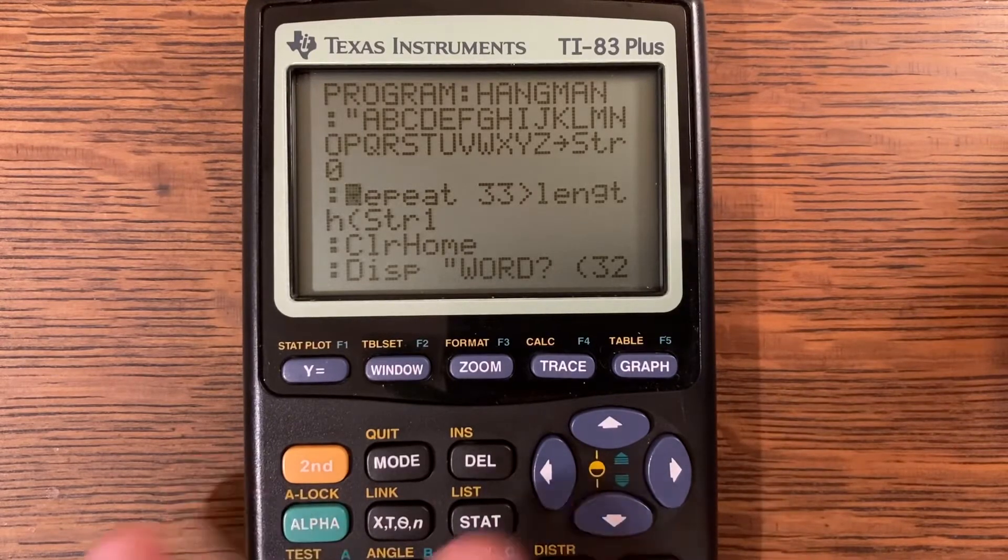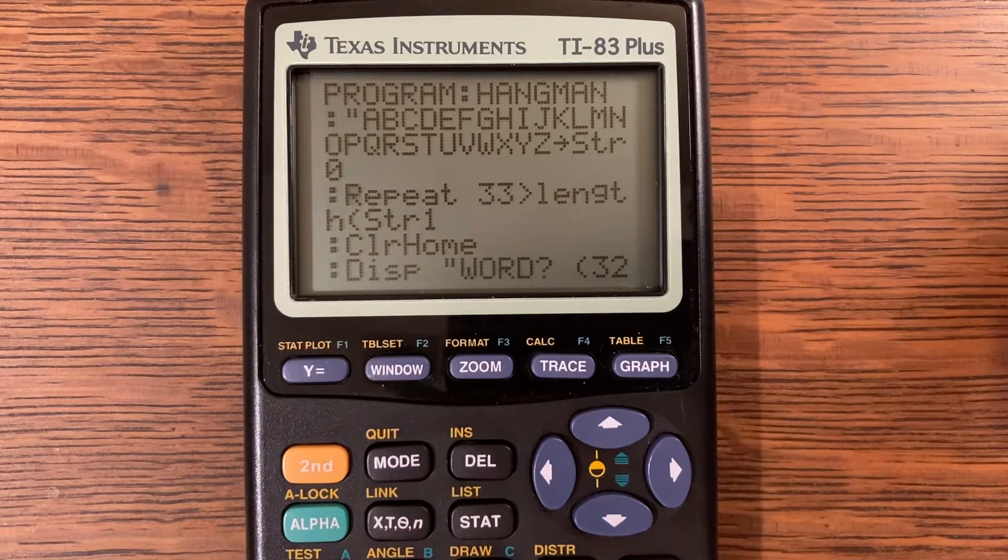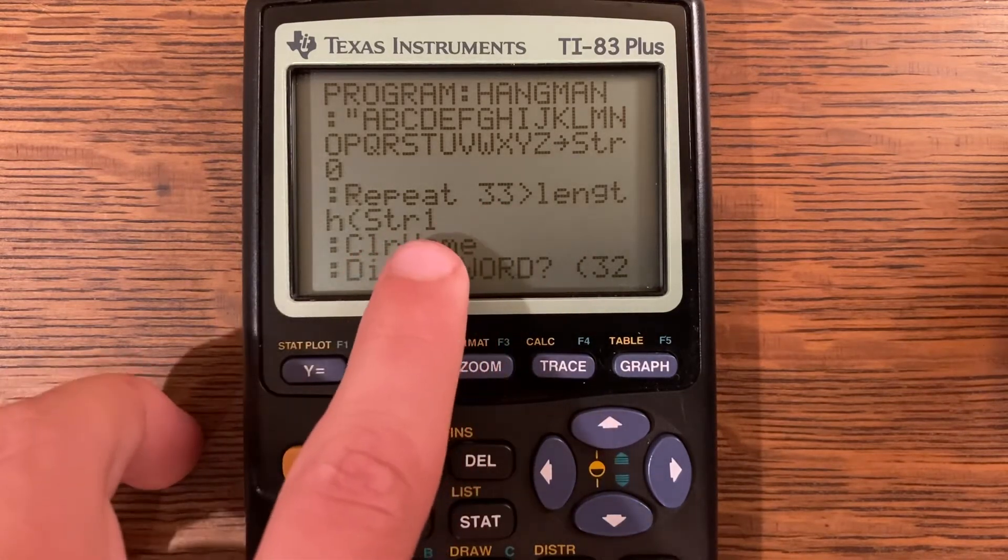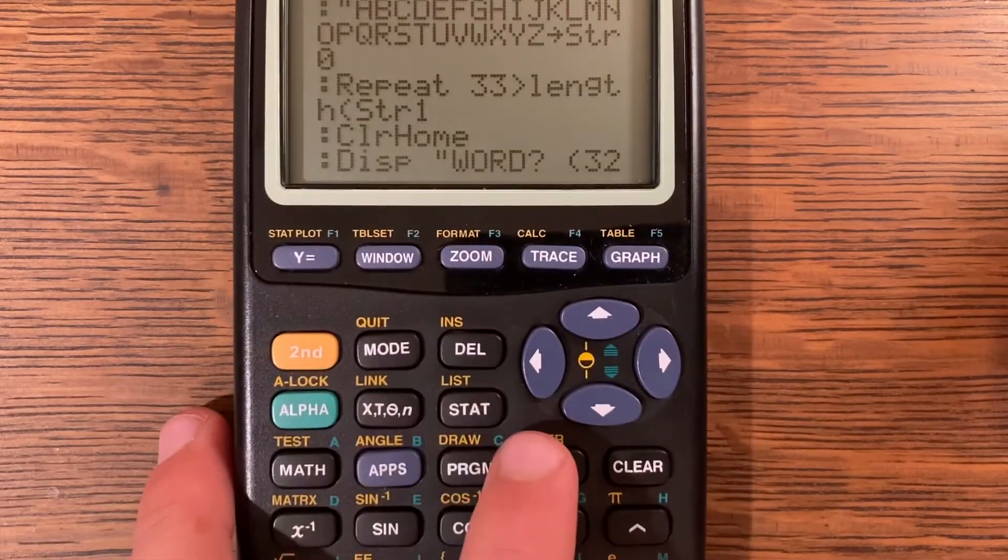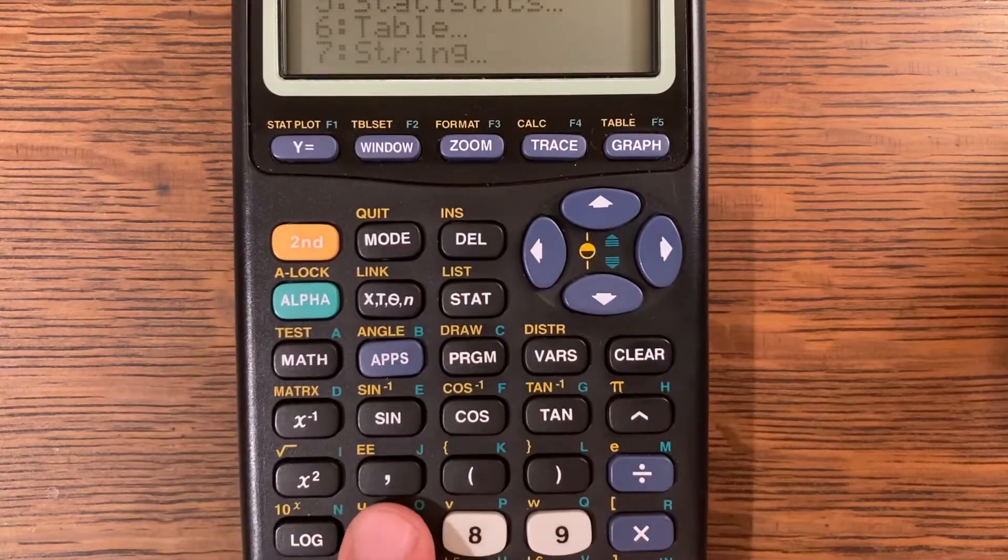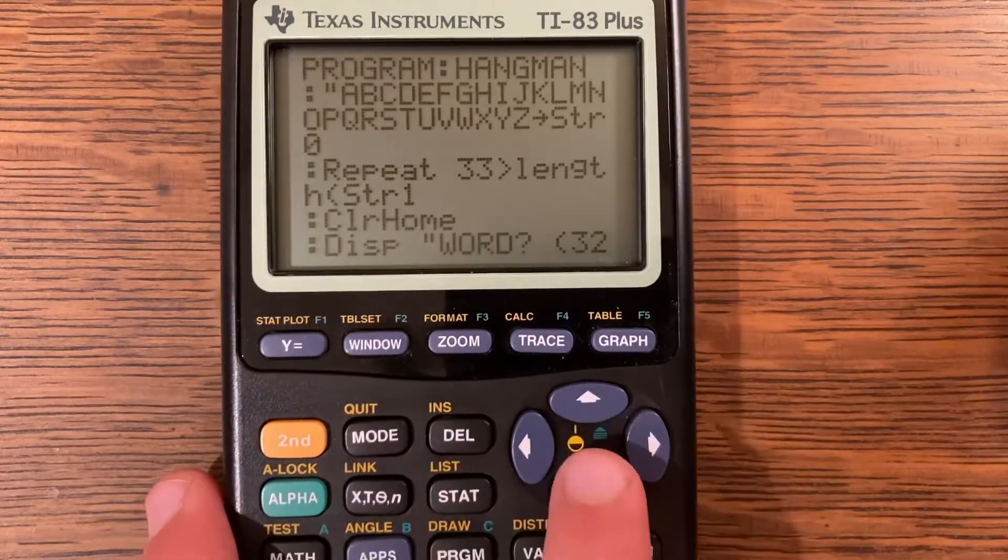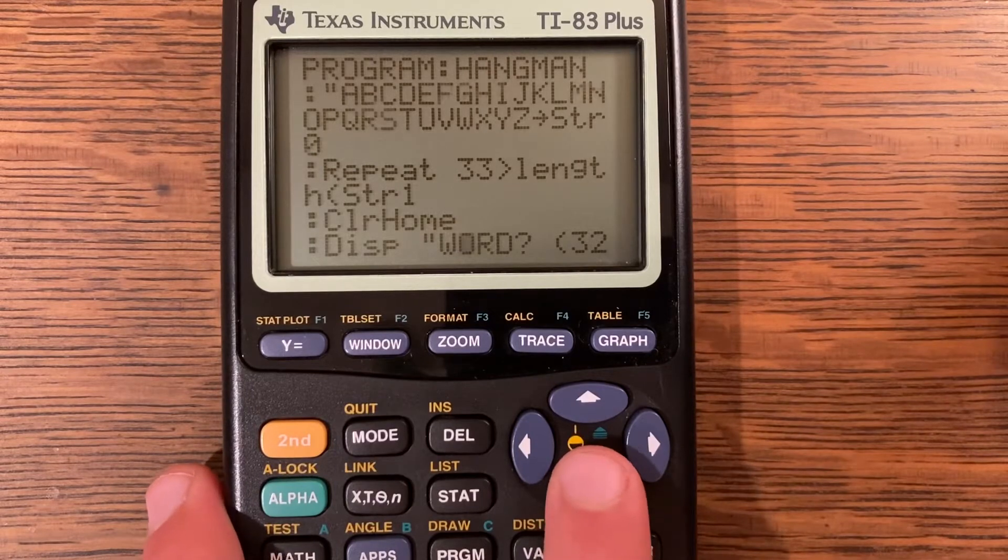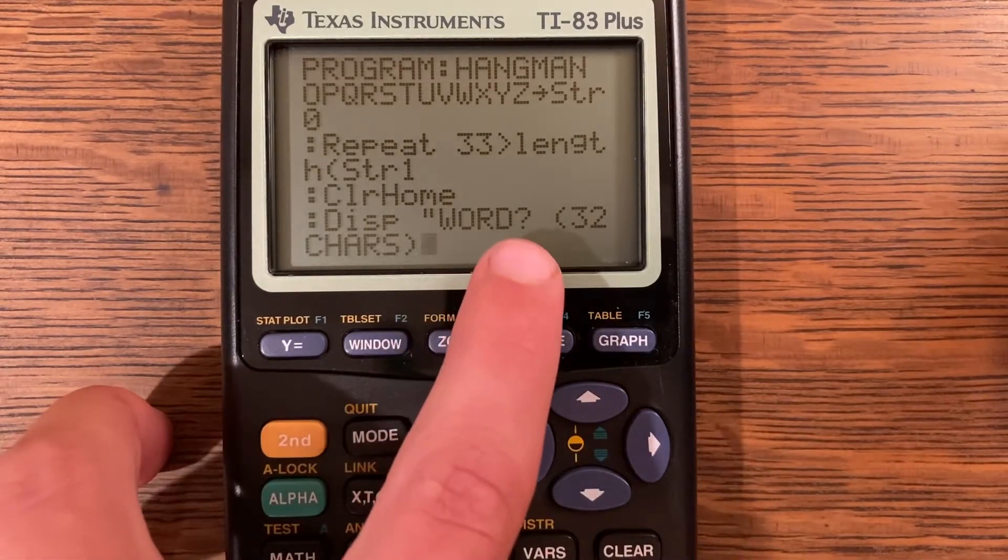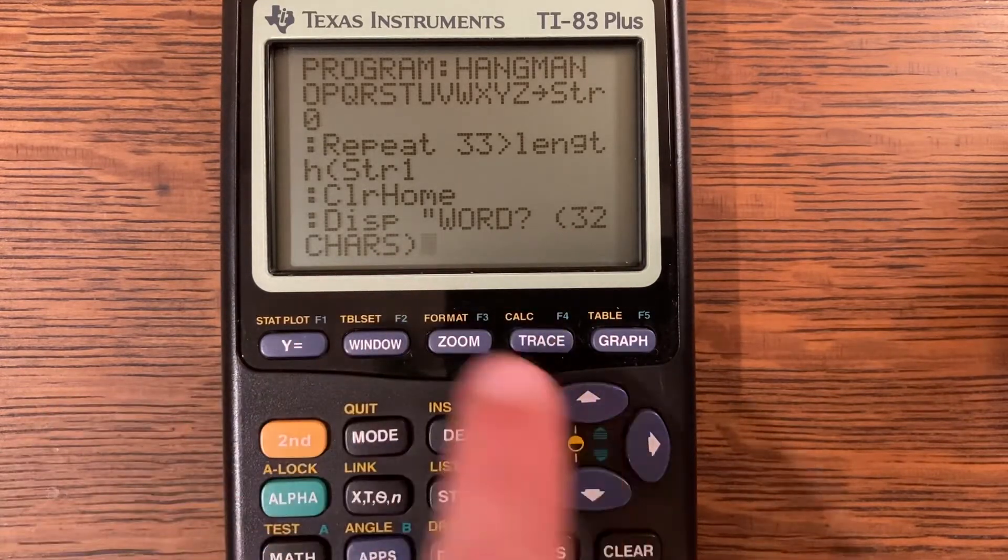After you have that done, we have repeat until 33 is greater than length of string one. You'll see that right here there's string one, so you'll just do the same exact operation by clicking VARS, the seven key, and then you can just click enter for string one.